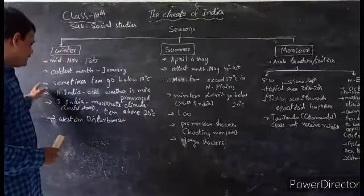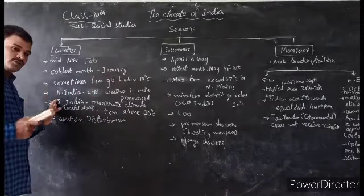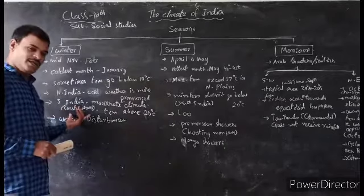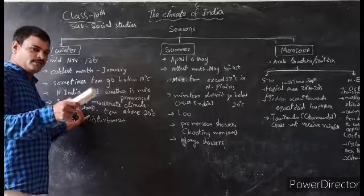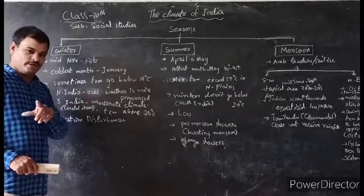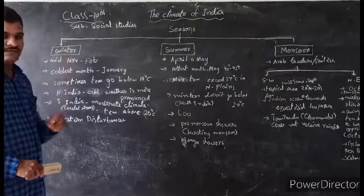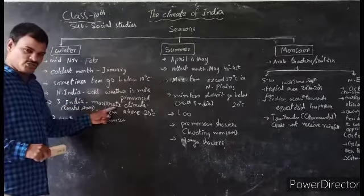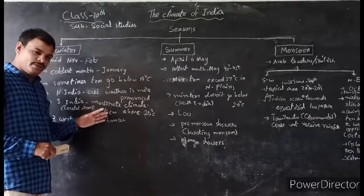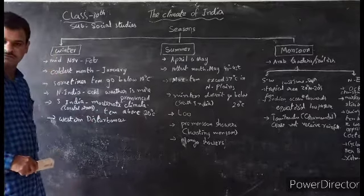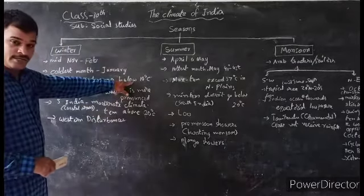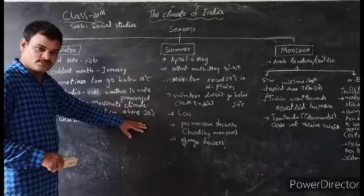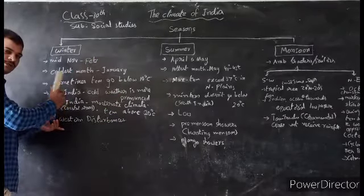What about South India? Unlike North India, South India enjoys moderate climate because of coastal areas. We already learned about the moderate influence of the sea on climate in the previous video — that factor most affects South Indian climate. Here the minimum temperature is above 20 degrees, so South India is warmer than North India in winter season.